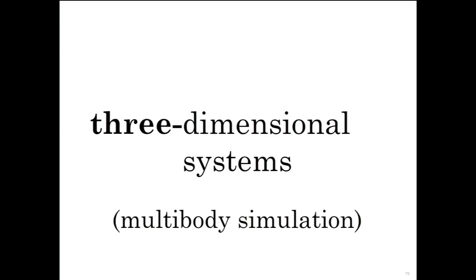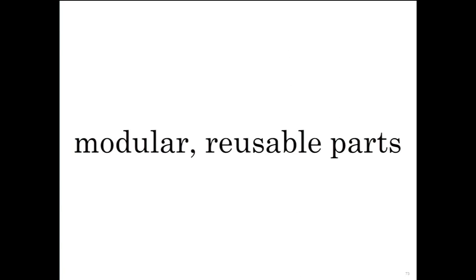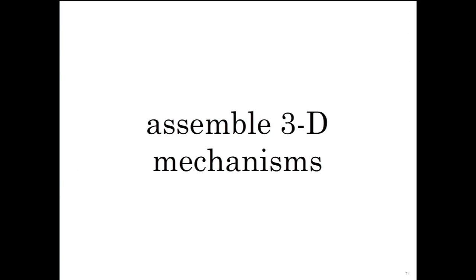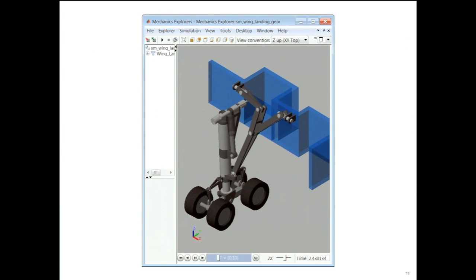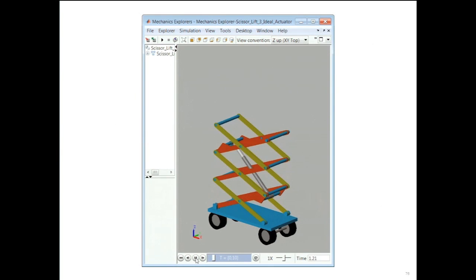So what else can we do? To this point, we've spoken mainly about one-dimensional systems. Now let's take a look at three-dimensional systems, or multi-body simulation. We've added new capabilities to SimMechanics that enable you to build modular reusable parts and assemble them into 3D mechanisms, such as landing gear, scissor lifts, and engines.